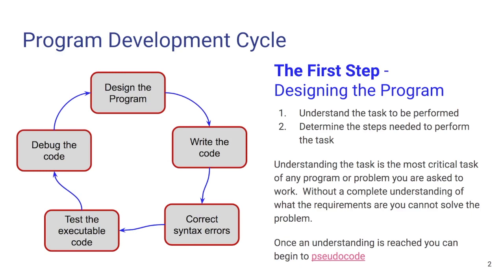The cycle works its way from the top all the way around in clockwise fashion. What we need to do first and foremost is always understand the problem. In this class I'm going to offer you the problem, but if you don't understand some of it you need to make sure that you ask, because you cannot code a solution to a problem you do not fully understand. If you don't have all of the information going into it or an understanding of how you're going to attack it, there's no way for you to code it.